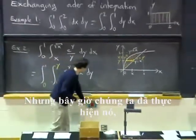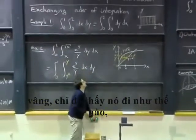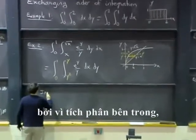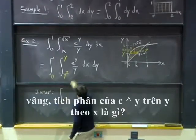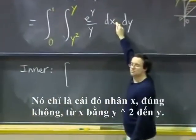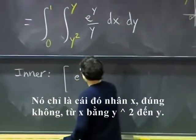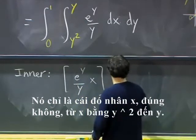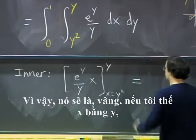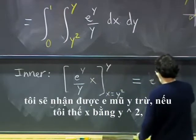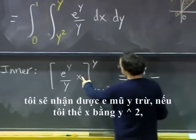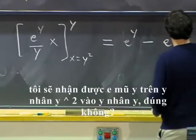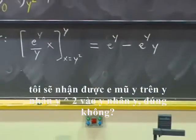But now that we have done that, well, just to see how it goes, it is actually going to be much easier to integrate because the inner integral, well, what is the integral of e to the y over y with respect to x? It is just that times x, right? From x equals y squared to y. So that will be, well, if I plug x equals y, I will get e to the y minus, if I plug x equals y squared, I will get e to the y over y times y squared. E to the y times y.